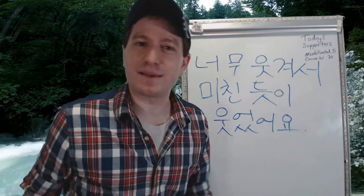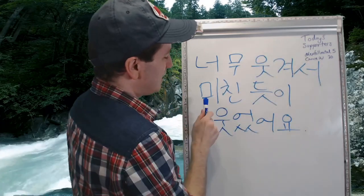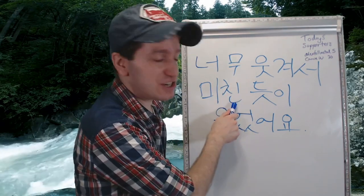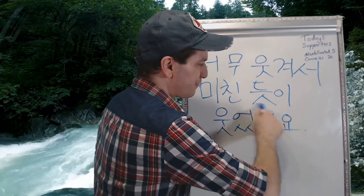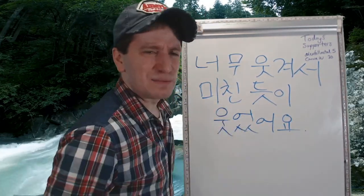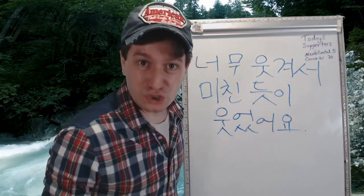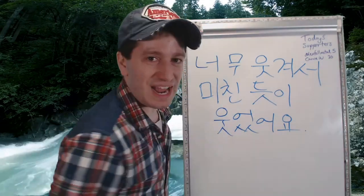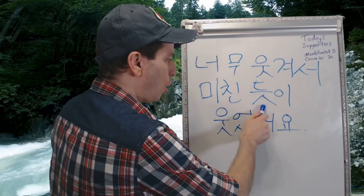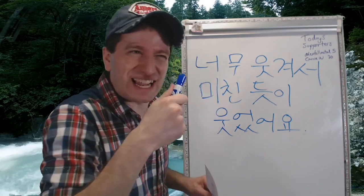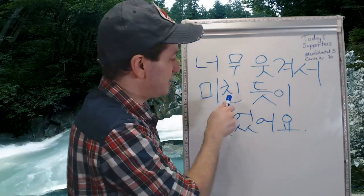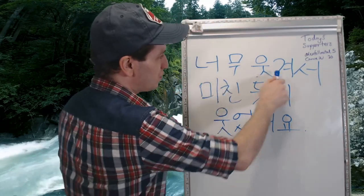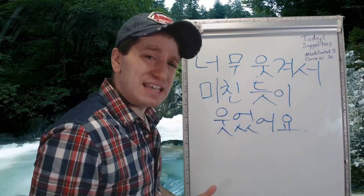For example: 웃기다 means to be hilarious — something is really funny. And 미치다 means to be crazy, to lose your mind — used here in the past tense as an adjective. So: 너무 웃겨서 미친 듯이 웃었어요. I laughed as if I was crazy because it was so, literally, 너무 — too funny. I laughed like crazy because it was so funny. I laughed like I was crazy. So almost the same as I was crazy — almost as if, not really, but like almost as if I were. Almost just the same as this action verb that comes before 듯. I laughed as if I was crazy.